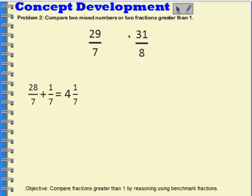Now let's think about 31 eighths. I also know that 8 times 4 is 32, so this can't have a whole of 4. It would need 32 parts as the numerator. That tells me it must be 3 wholes. 3 times 8 is 24, so 24 eighths would equal 3 wholes.